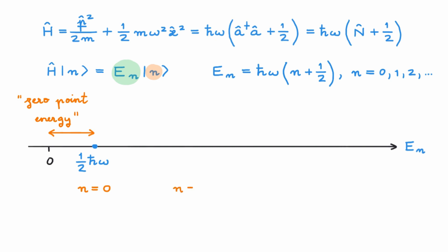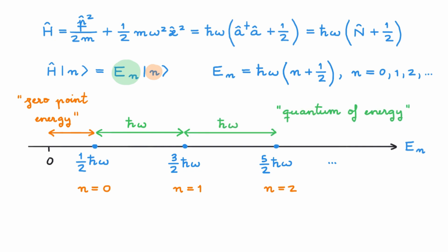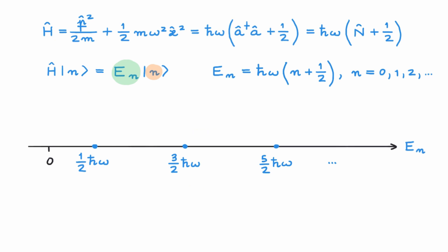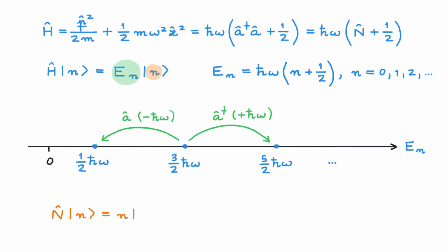The next allowed value is for n equals 1, and it is 3/2 times ħω. The allowed energy levels are separated by an energy ħω, which is called a quantum of energy. The ladder operators allow us to move between energy eigenstates: the raising operator allows us to increase the energy by one quantum at a time, and the lowering operator allows us to go the other way. The number operator allows us to count how many energy quanta there are in this system above the zero point energy. This was our quick refresher on the energy levels of the quantum harmonic oscillator — for more details check the corresponding videos linked in the description.